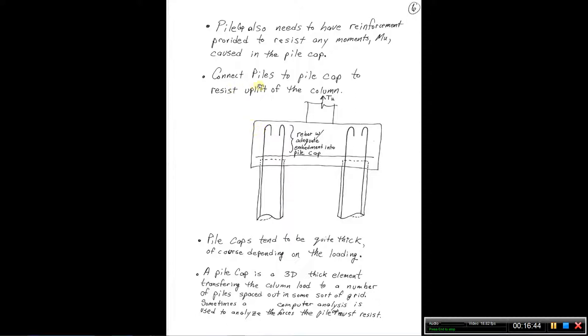We want to connect the piles to the pile cap to resist uplift. So if the column has a tensile upwards force on it, we're going to have some hooks coming up from the pile and hooking into that pile cap. There would also have to be some hooks coming down from the column and being embedded in the column pile cap as well.